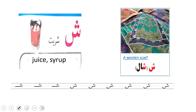Sheen. Sheen — sherbat. Sherbat means juice or syrup. Sheen — shal. Shal means a woolen scarf. We write Sheen like this.